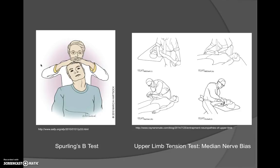The upper limb tension test biasing the median nerve progressively loads the median nerve throughout the test. Ask whether the patient's familiar pain is reproduced with each additional loading movement. First, depress the shoulder using your forearm, then abduct the shoulder to 90 degrees with the elbow bent. Next, maximally externally rotate the shoulder, supinate the forearm, extend the wrist and fingers, and then extend the elbow. Wherever the patient experiences familiar pain, release that position just enough for symptoms to subside, then ask the patient to bring the opposite ear to their shoulder. If this elicits their familiar symptoms, that is a positive finding.